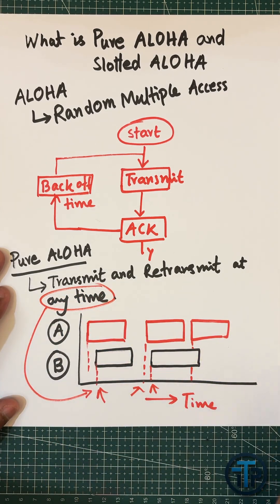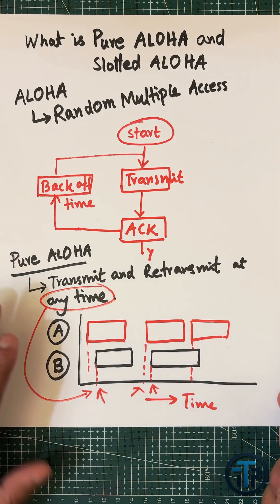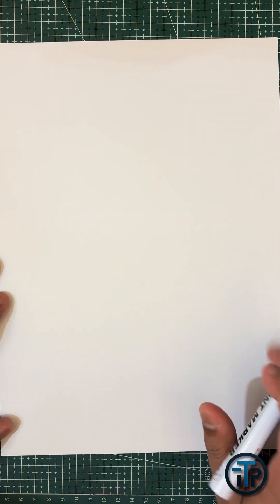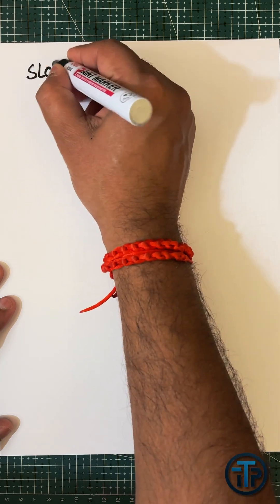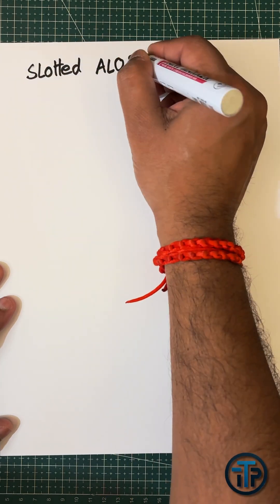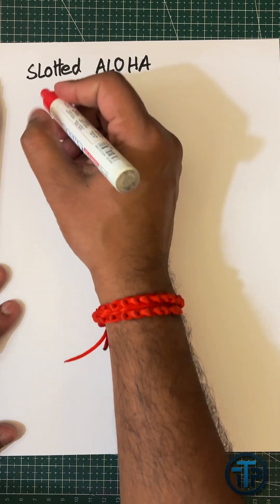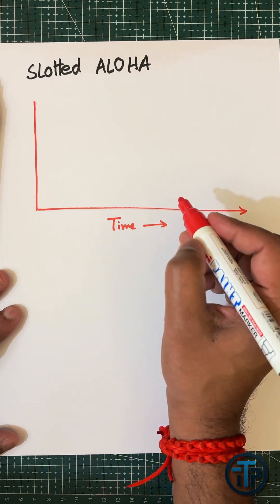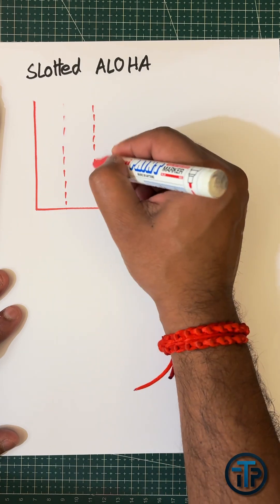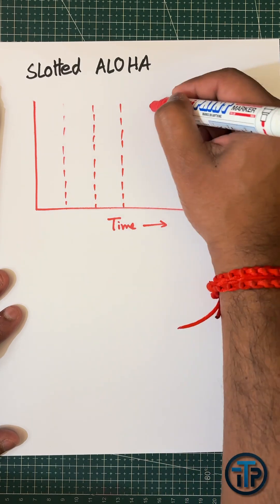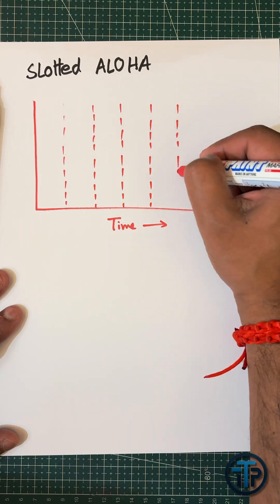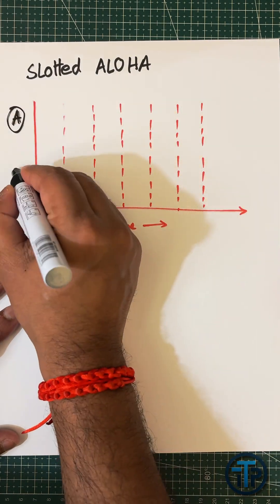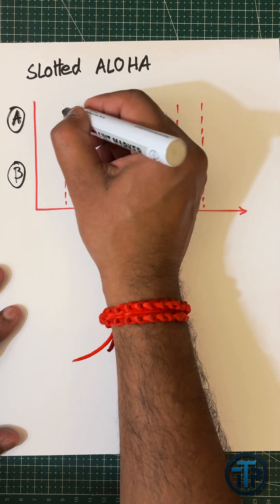What is slotted ALOHA? The concept of slotted ALOHA is that first you have to divide the entire time into some small time slots. So let us divide the entire time into small time slots, and these are basically of equal size.